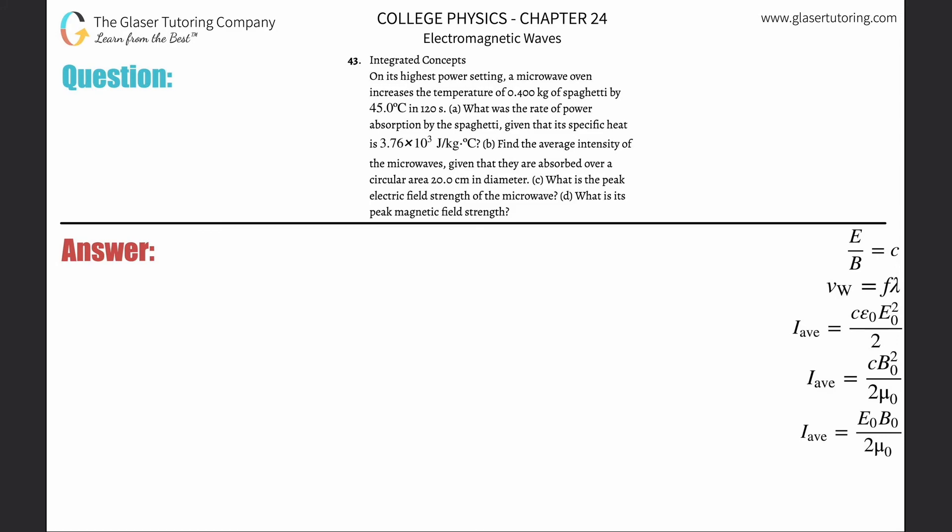Number 43, integrated concepts. On its highest power setting, a microwave oven increases the temperature of 0.4 kilograms of spaghetti by 45 degrees Celsius in 120 seconds. Letter A, what is the rate of power absorption by the spaghetti, given that its specific heat is 3.76 times 10 to the third?